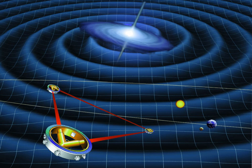LISA would be the first dedicated space-based gravitational wave detector. It aims to measure gravitational waves directly by using laser interferometry.